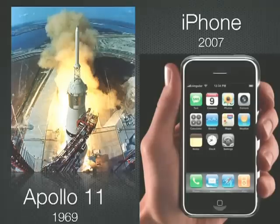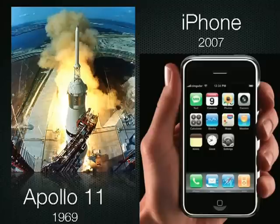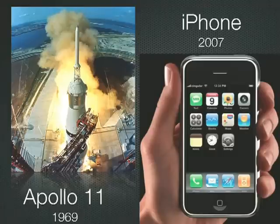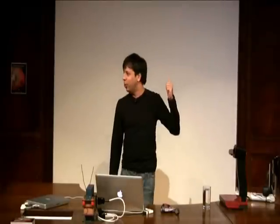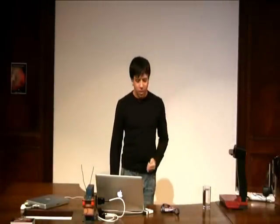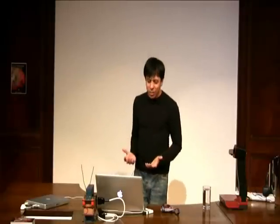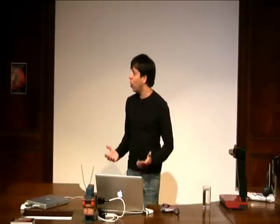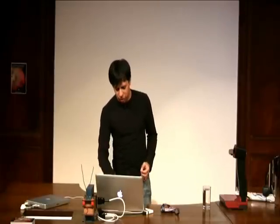The iPhone, in addition to being 250 times more powerful than Colossus, is 500 times more powerful than the guidance control computers of Apollo 11 — the thing that put Neil Armstrong on the moon. So what does this all mean? We live in very interesting times — we have devices as cheap, as powerful, as small, as ubiquitous in our hands, in our pockets, all around us. What can we do with this? Let's see.